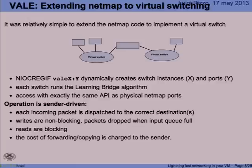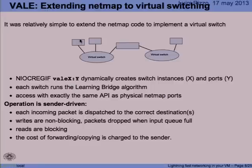A follow-up to NetMap was to extend the API and the kernel module to implement a virtual switch. Basically, the NetMap module in FreeBSD is now able to interpret port names of the form vale:X:Y as a request to create a virtual switch named X, a port named Y on that switch, and run the Ethernet learning bridge algorithm on that switch. You can create multiple switches, multiple ports, and connect clients using the NetMap API to a Vale port in the same way as you can connect to a physical NIC in NetMap mode. So you can test your application over a Vale switch and then run over a real interface — the system is extremely flexible.